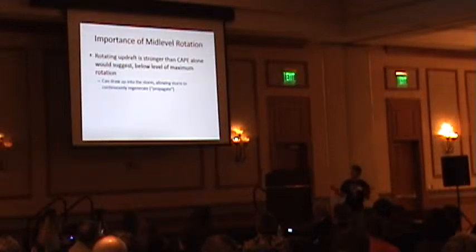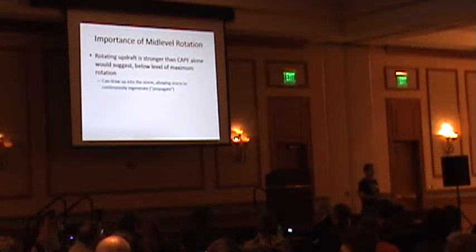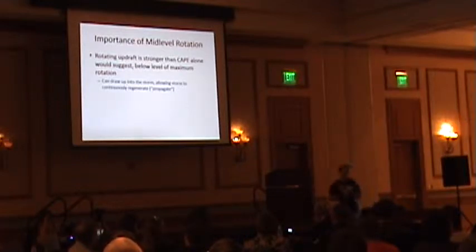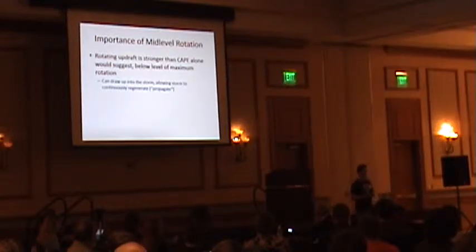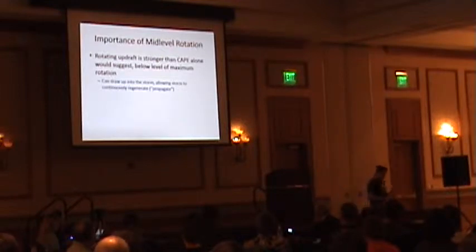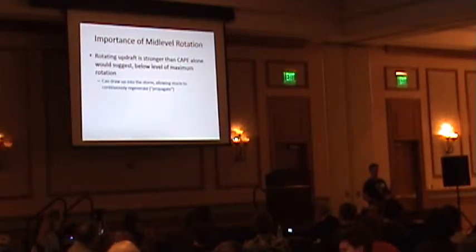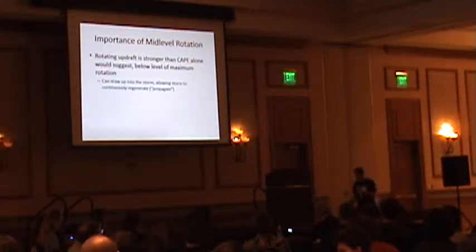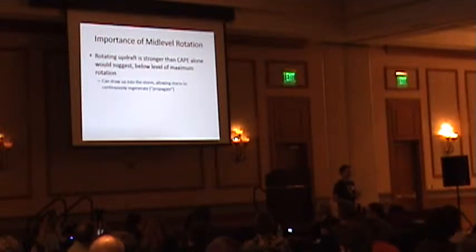Why does mid-level rotation even matter? Is anyone aware that a rotating updraft is stronger than a non-rotating one? Any time you have rotation in a storm, there's a low associated with it - doesn't matter if it's anticyclonic or cyclonic, left mover or right mover. The stronger the rotation, the stronger the low. Air flows into a low, so if you have very strong mid-level rotation, below that level of strongest rotation you've got a strong mid-level low drawing air up from below, making the updraft stronger. That's how the storm keeps regenerating itself - that's why supercells are persistent.